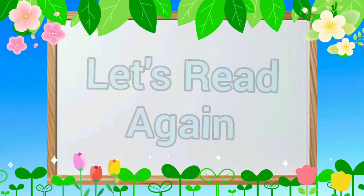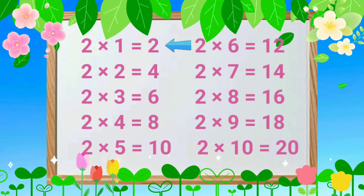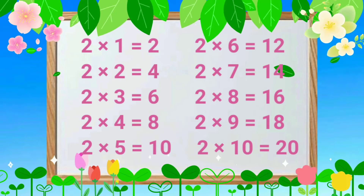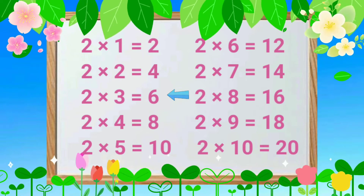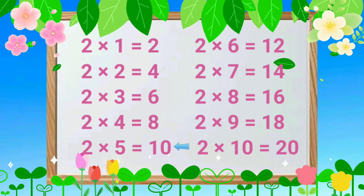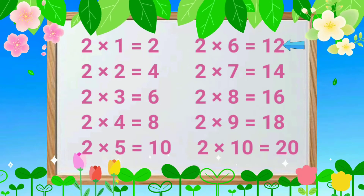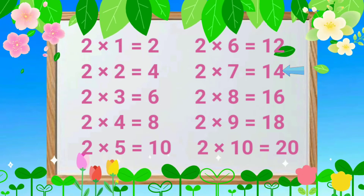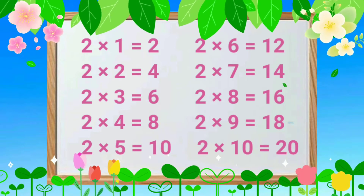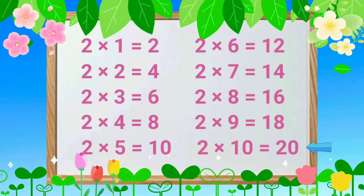Let's read again. 2 1s are 2, 2 2s are 4, 2 3s are 6, 2 4s are 8, 2 5s are 10, 2 6s are 12, 2 7s are 14, 2 8s are 16, 2 9s are 18, 2 10s are 20.